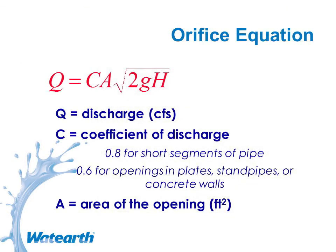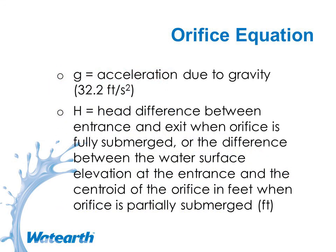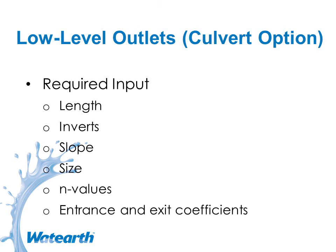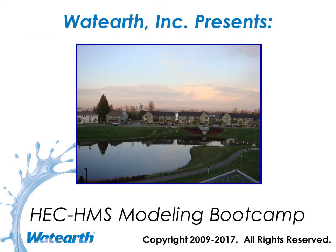The orifice equation uses a coefficient of discharge of 0.6 if it's basically a hole, and the area of the opening — not diameter, but area. If fully submerged, the head differential is between the upstream detention side and the downstream receiving stream side. If not fully submerged, it's the difference between the water surface on the detention side and the centroid of the orifice. HEC-HMS analyzes both inlet and outlet control — inlet control when you essentially have free discharge, outlet control when it's more backwater-controlled — and you might have a combination during a given storm event. You need the same information for culverts that you'd use in HEC-RAS. We'll come back to the workshops.